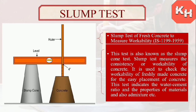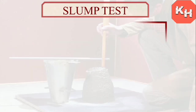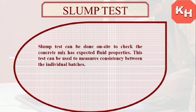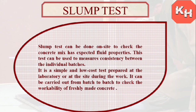This test is also known as the slump cone test. It measures the consistency and workability of concrete, and is used to check the workability of fresh concrete for easy placement and pouring. The test indicates the water-cement ratio, the properties of materials used in concrete, and the admixtures used. It can be done on site to check that the concrete mix has expected fluid properties, and also to measure consistency between individual batches when concrete is ready to pour.